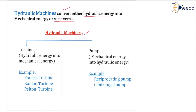Hydraulic machines can be divided into two parts: turbine and pump, but their functions are different. In the turbine, hydraulic energy is converted to mechanical energy, and then this mechanical energy is further developed into electrical energy — that is how we get electricity. In the pump, first we supply electrical energy, which is developed into mechanical energy, and this mechanical energy is then converted to hydraulic energy.